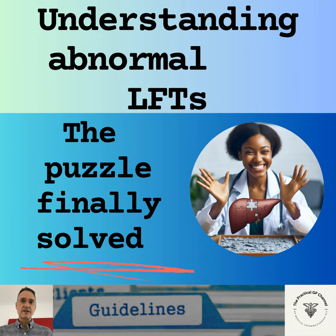Those with intermediate FIB4 scores — that is between 1.3 and 3.25 — or NAFLD fibrosis scores between minus 1.455 and 0.625, should have an ELF test or a fibroscan. If the result is 9.5 or less or 7.8 or less respectively, we will manage them in primary care, and we will refer if the results are above those limits. In primary care, the treatment for NAFLD is weight loss, alcohol advice, the reduction of cardiovascular risk, and the management of comorbidities.